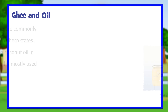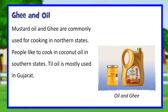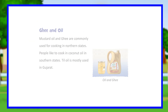Ghee and oil. Mustard oil and ghee are commonly used for cooking in northern states. People like to cook in coconut oil in southern states. Till oil is mostly used in Gujarat.